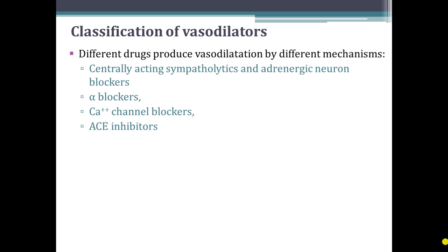ACE inhibitor drugs also produce vasodilatation because they act by inhibiting angiotensin converting enzyme. So angiotensin converting enzyme is inhibited, angiotensin 2 is not produced — and since angiotensin 2 is a vasoconstrictor substance — vasodilatation is produced. But these drugs produce vasodilatation by different other mechanisms, so they are not classically vasodilators. Classical vasodilators are direct acting vasodilator drugs.